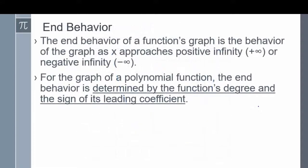End behavior. The end behavior of a function's graph is the behavior of the graph as x approaches positive infinity or negative infinity. Basically, what this means is what are the y values doing for a function as x approaches positive infinity and negative infinity. For the graph of a polynomial function, the end behavior is determined by the function's degree and the sign of its leading coefficient.